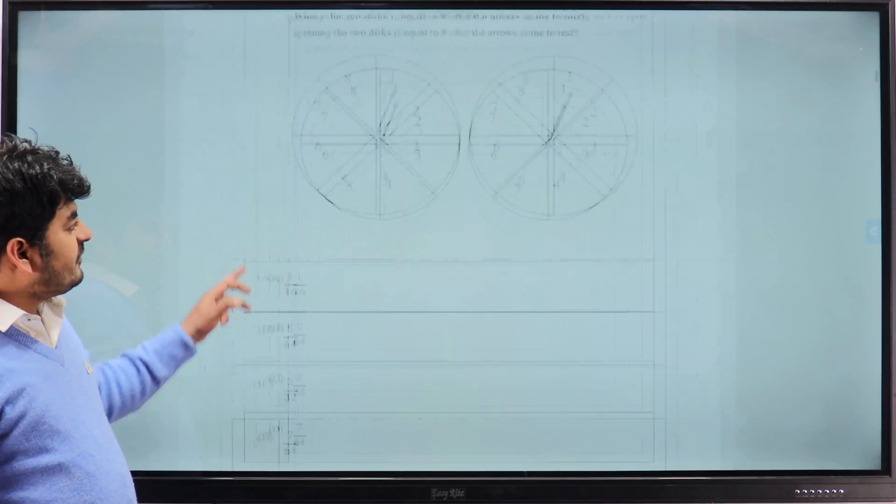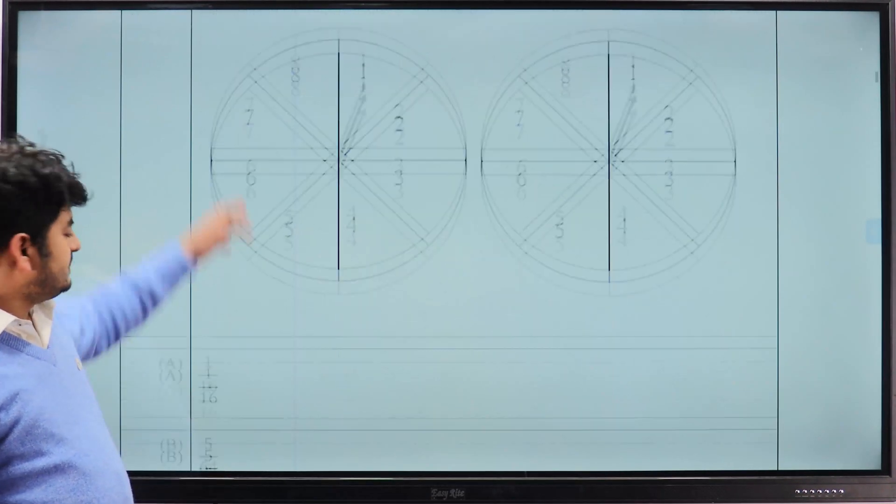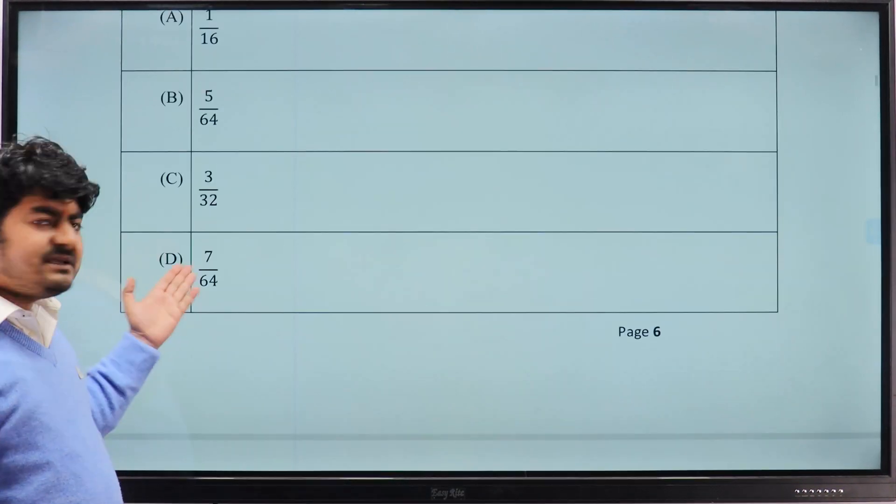For this question from the probability part, the correct answer is option B: 7 by 64.